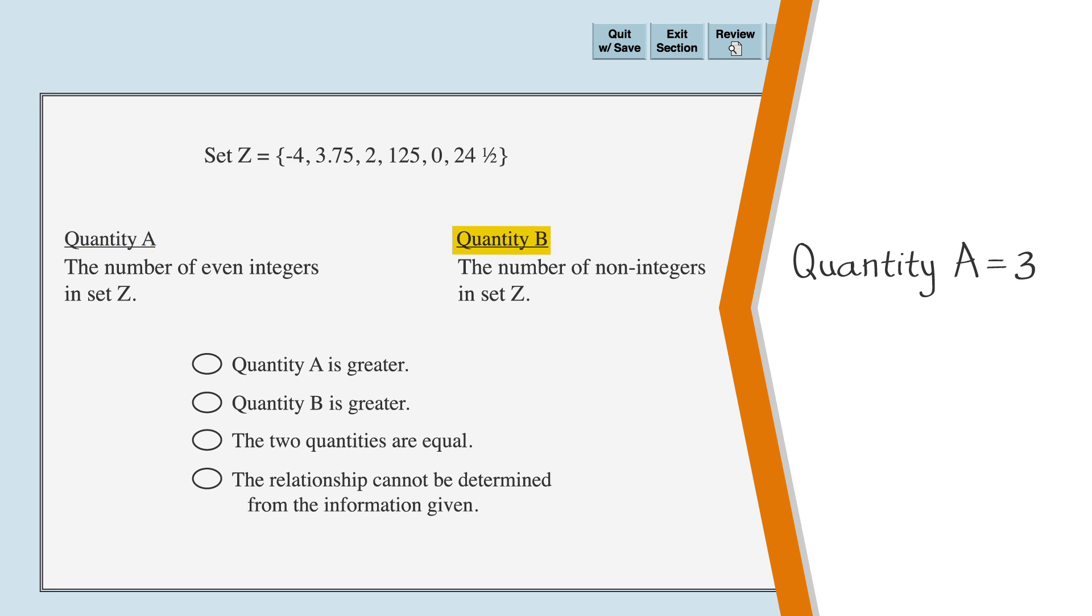Next we turn our attention to quantity B. We'll identify the non-integers in set Z: 3.75 and 24 and 1 half. We find that quantity B equals 2. Looking at our answer choices, we see that the correct answer choice is that quantity A is greater.